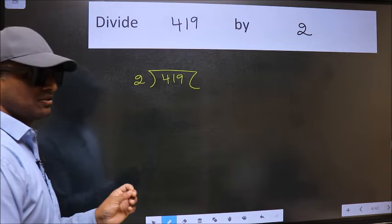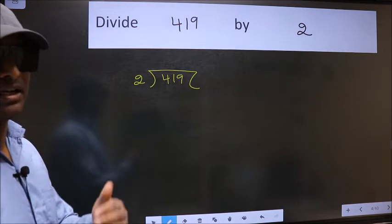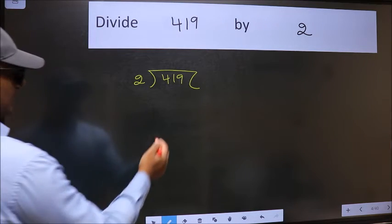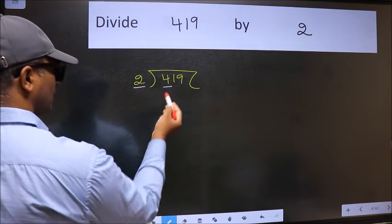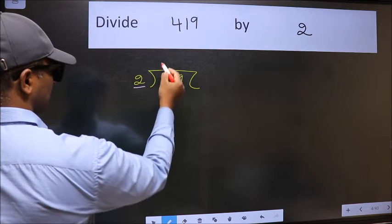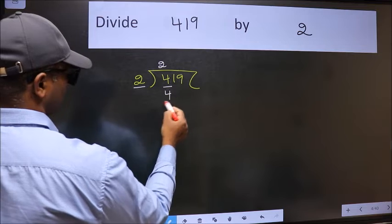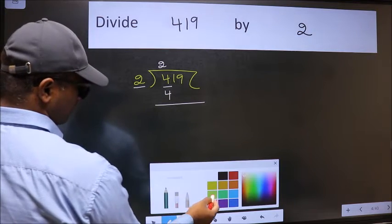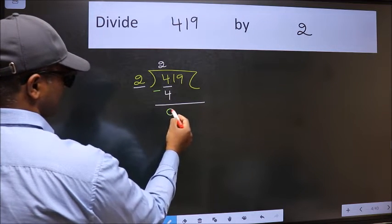This is your step 1. Next, here we have 4 and here 2. When do we get 4 in 2 table? 2 2's, 4. Now we should subtract. We get 0.